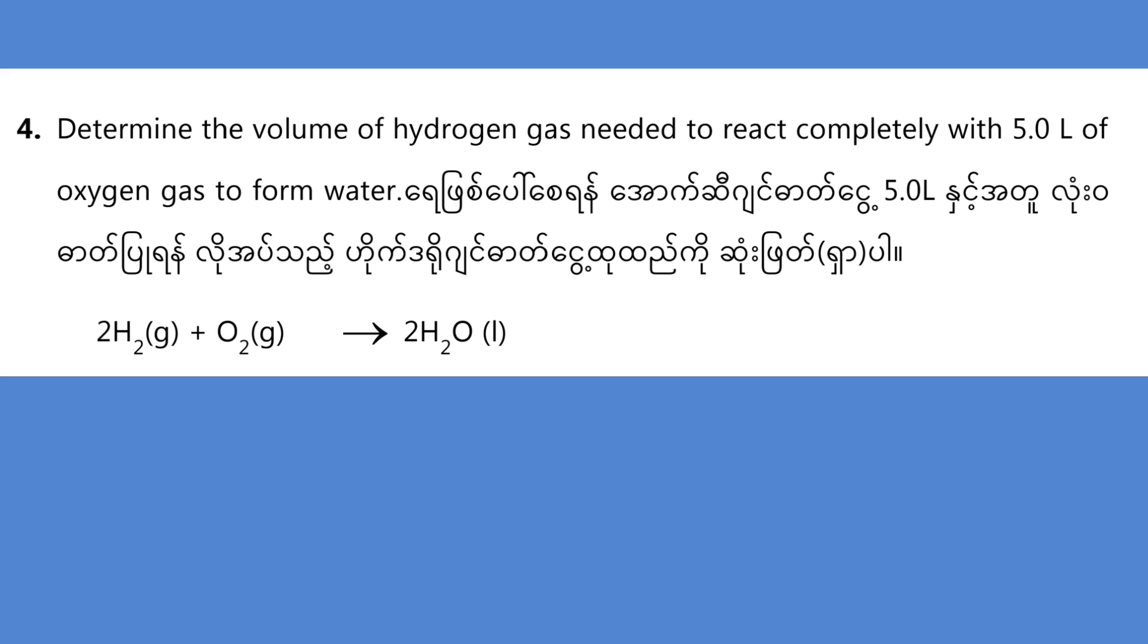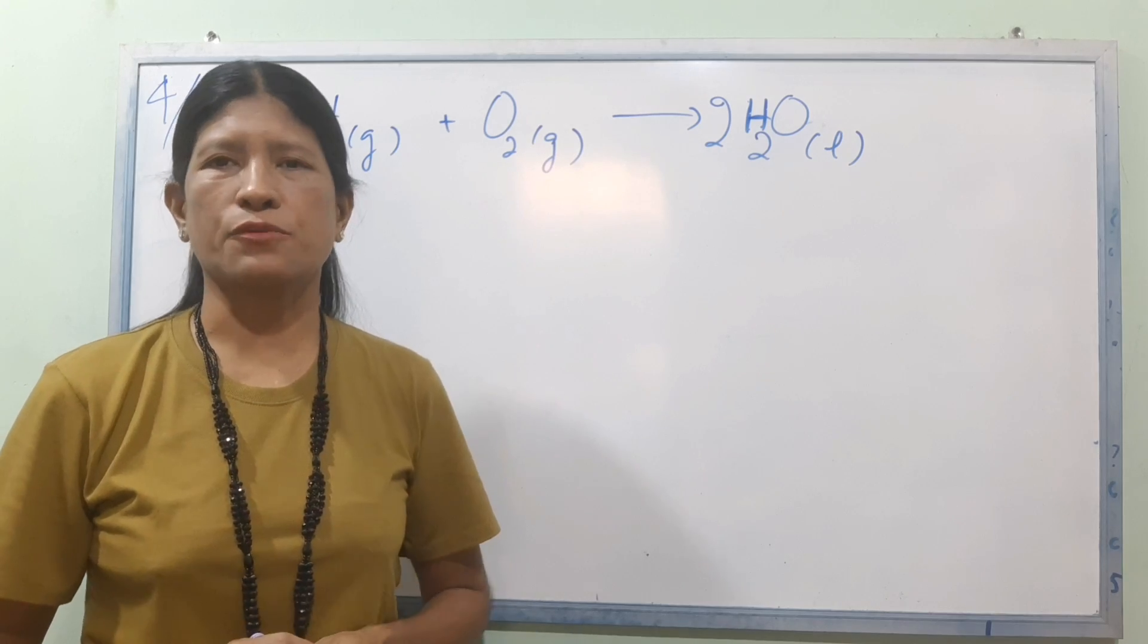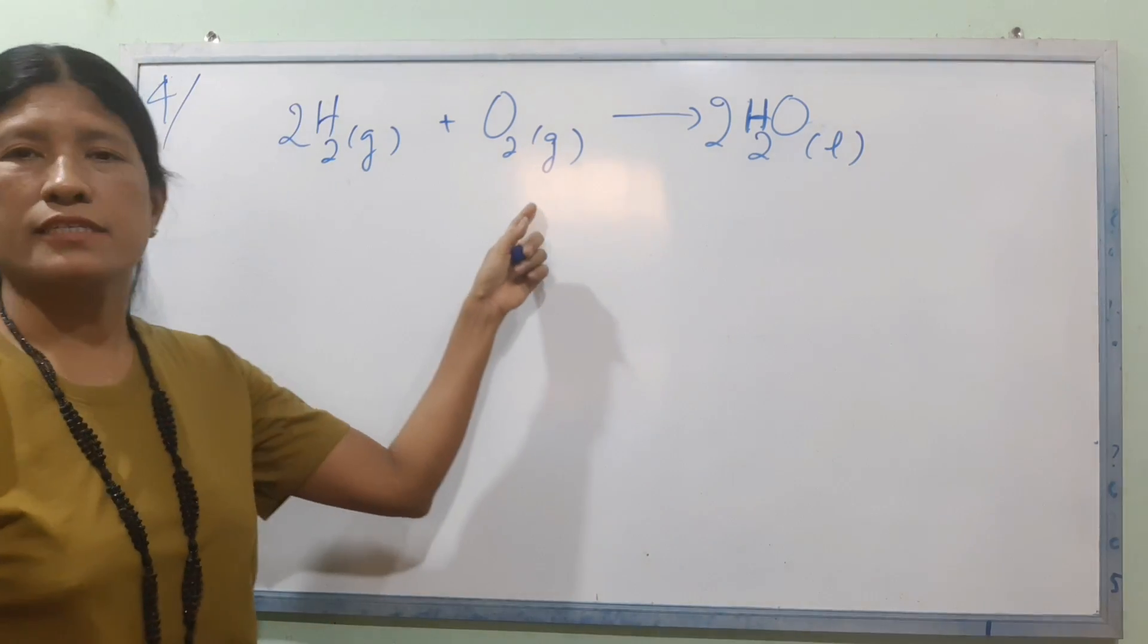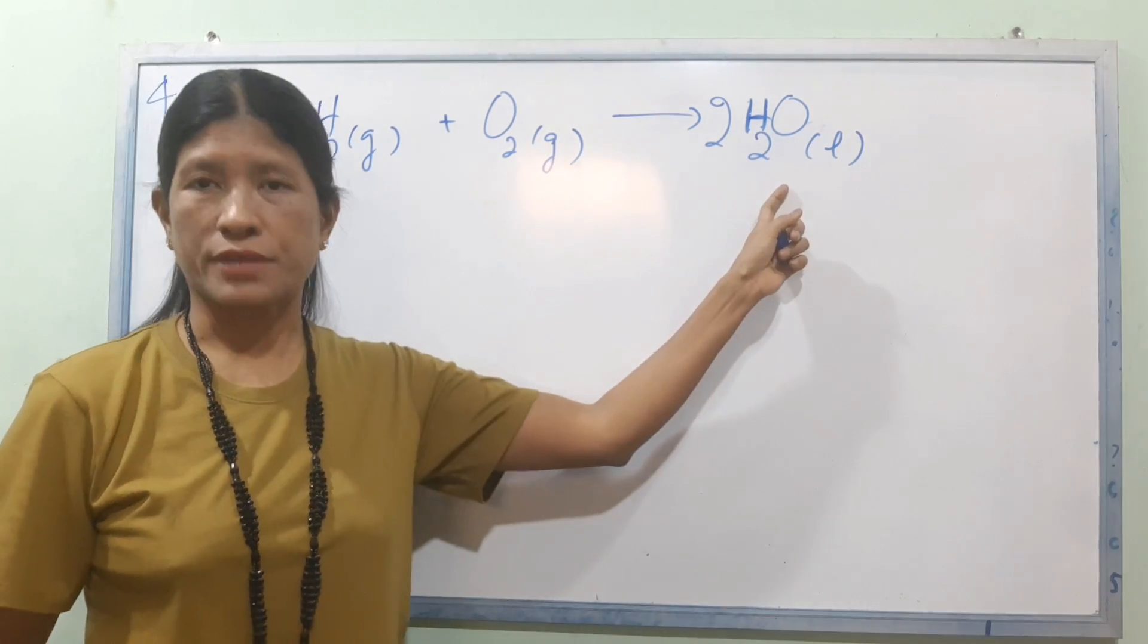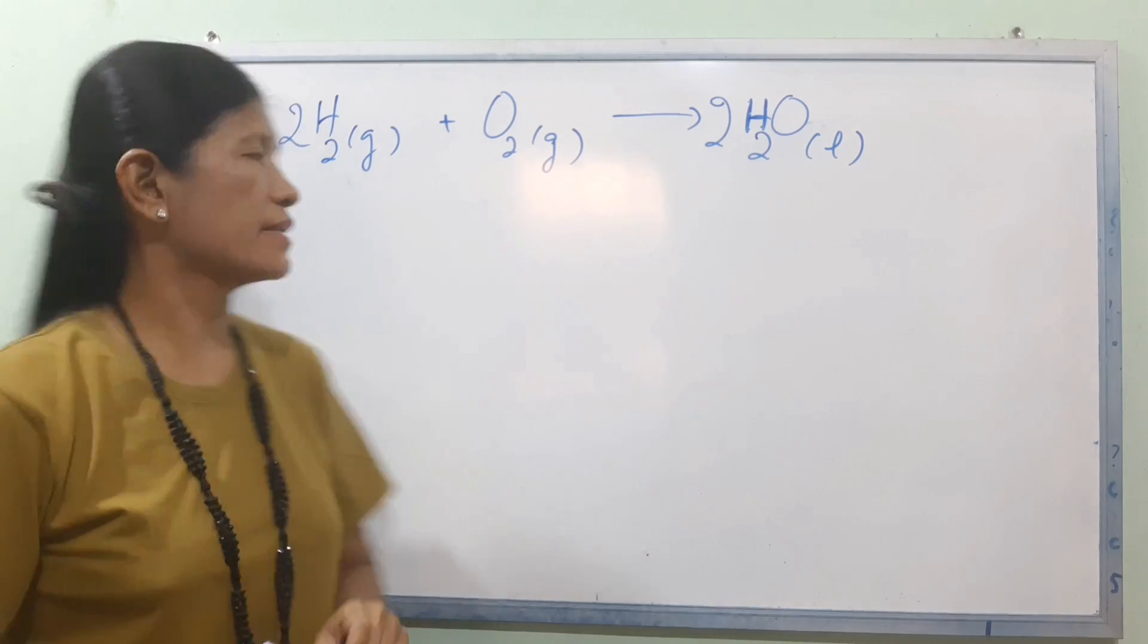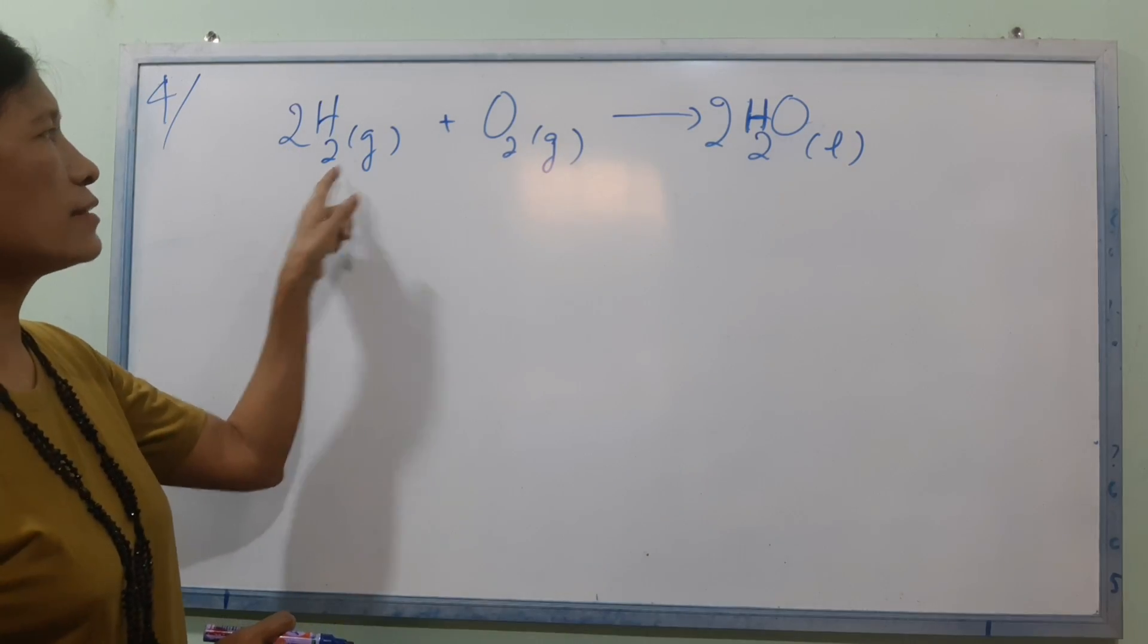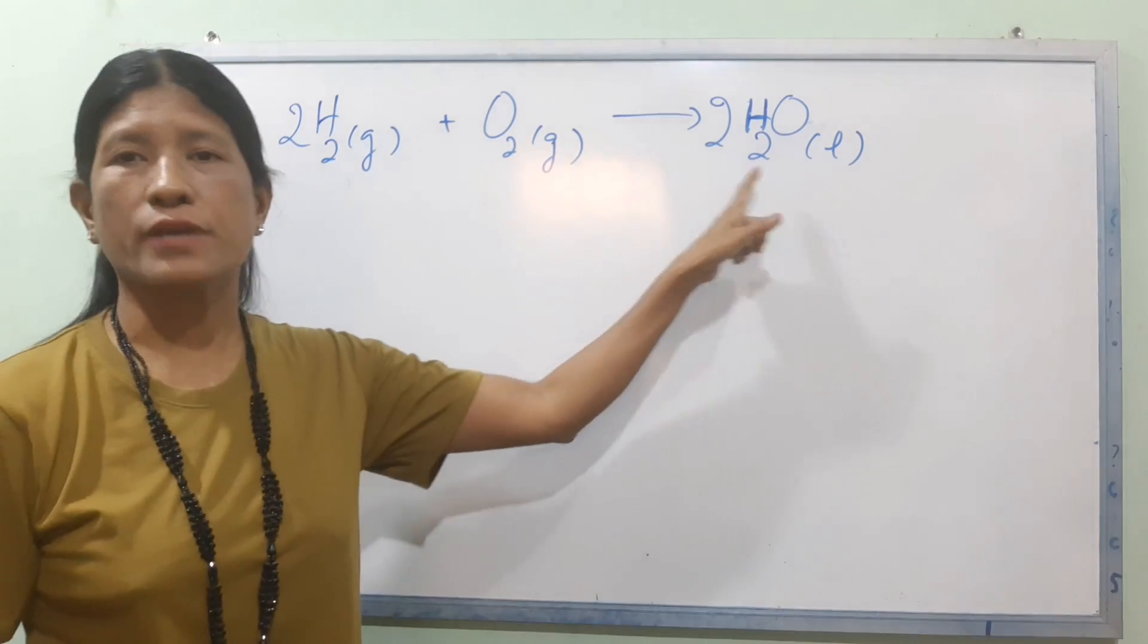Question 4: Determine the volume of hydrogen gas needed to react completely with 5.0 liters of oxygen gas to form water. The equation is 2H2 plus O2 gives 2H2O.